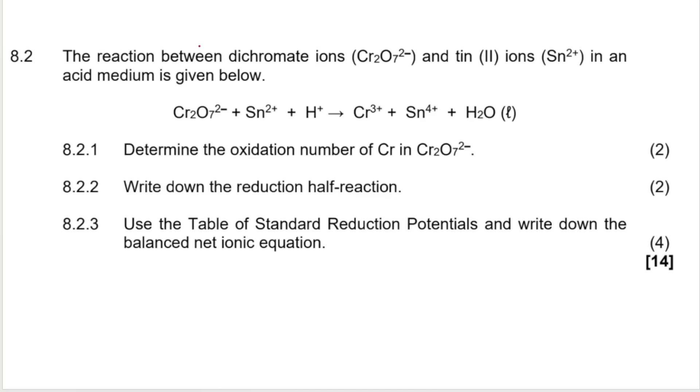8.2 says the reaction between dichromate ions and tin ions is in an acid medium. It's given below. Determine the oxidation number of Cr in Cr₂O₇²⁻. Now I've done this exact question in my previous redox video. So please go watch that video. If you want to see how I did this, I'll link it down in the description box below. It's a copy paste of that exact question. So go check it out over there.